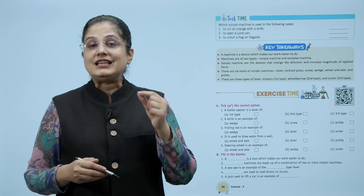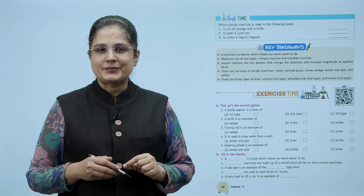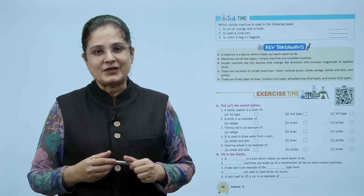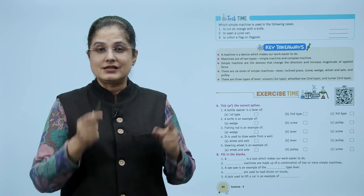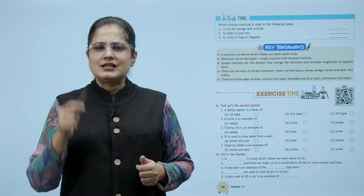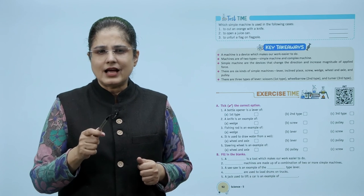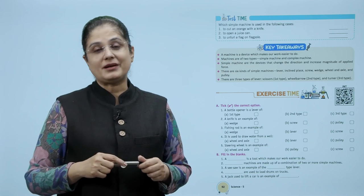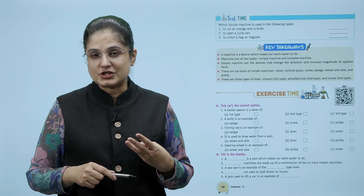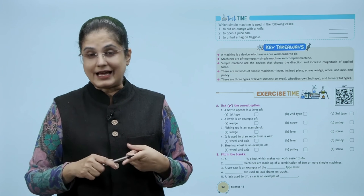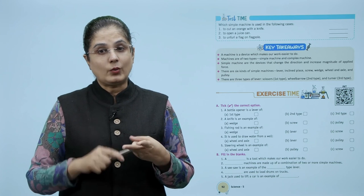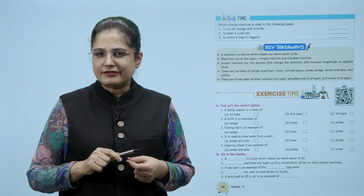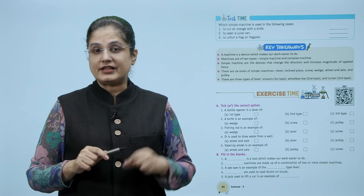So what were the key takeaways from this chapter? A machine is a device which makes our work easier to do. Machines are of two types: simple machine and complex machine. Simple machines are devices that change the direction and increase magnitude of applied force.